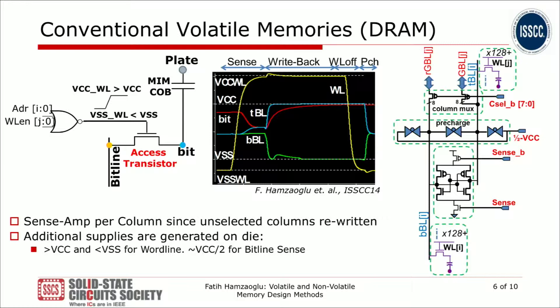Now DRAM. DRAM is different from SRAM — it is essentially one transistor and one capacitor, operating through charge storage. For a read operation: the bitline and reference bitline are pre-charged to half VCC, then after turning on the wordline, charge sharing between the storage capacitor and the bitline creates a delta V above the reference bitline. The sense amp fires, reads the data, and simultaneously writes back the bit value.